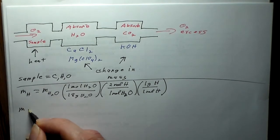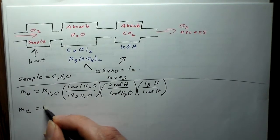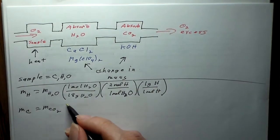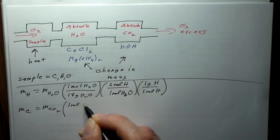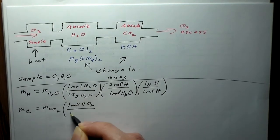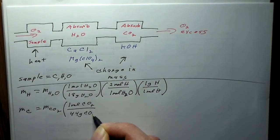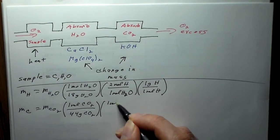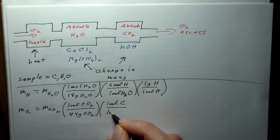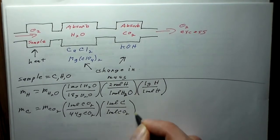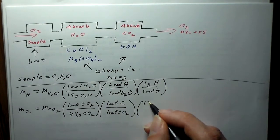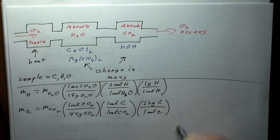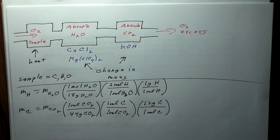We do something similar for the mass of carbon. That's going to be the mass of CO₂ absorbed, determined by the mass difference in that chamber, multiplied by: one mole of CO₂ is 44 grams, times one mole of carbon atoms per mole of CO₂, times 12 grams of carbon per mole of carbon. That will tell us the mass of our carbon.